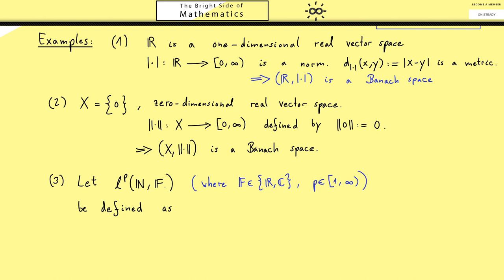Now as I said, this l^p(N,F) is defined as all the sequences in F that fulfill one condition. So you immediately see the notation here makes sense. This is the domain and this is the co-domain for the map given by the sequence. And now this condition is given by the series where you add up all the sequence members, and we do it in the absolute value and to the power p. And if this series now converges, which means it's less than infinity, then the sequence is in l^p.